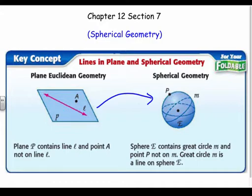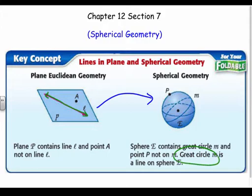One of the big things is to look at the lines. In plane Euclidean geometry, a line goes on forever on a flat surface. In spherical geometry it's tricky — the only lines that exist are ones that make a great circle.